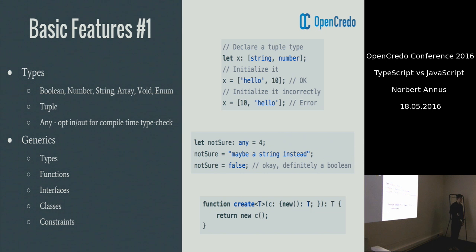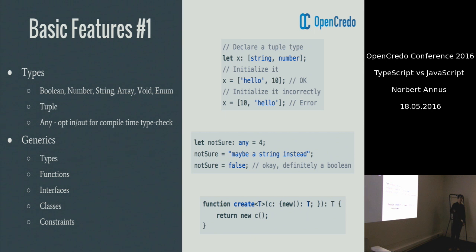We have a specific type called any, which provides backwards compatibility, and with the use of it, you can easily opt in and opt out of compile time type checking. You might be familiar with the concept of generics, and yes, it's there in TypeScript. With the help of it, you can define types, arrays, functions, interfaces, and classes, and you even have the possibility to set constraints on what T can be.